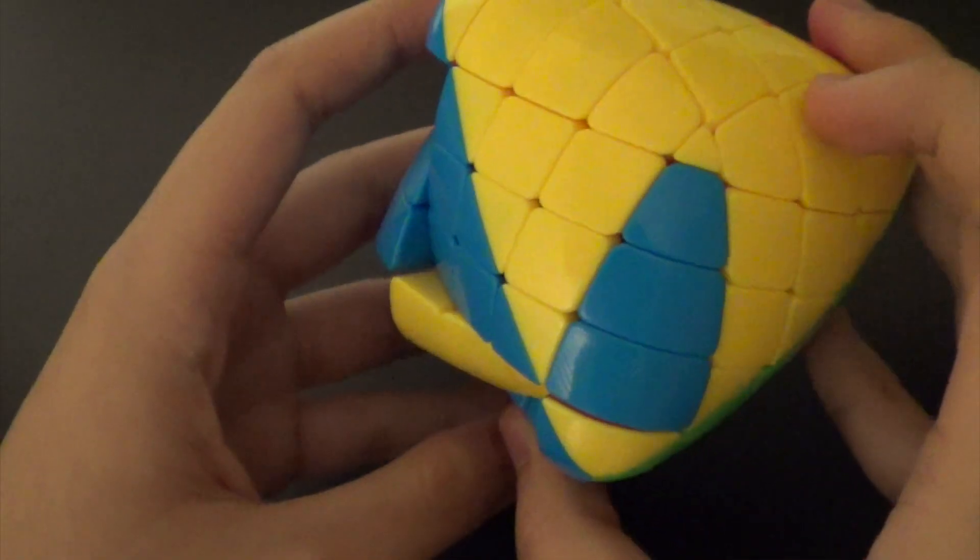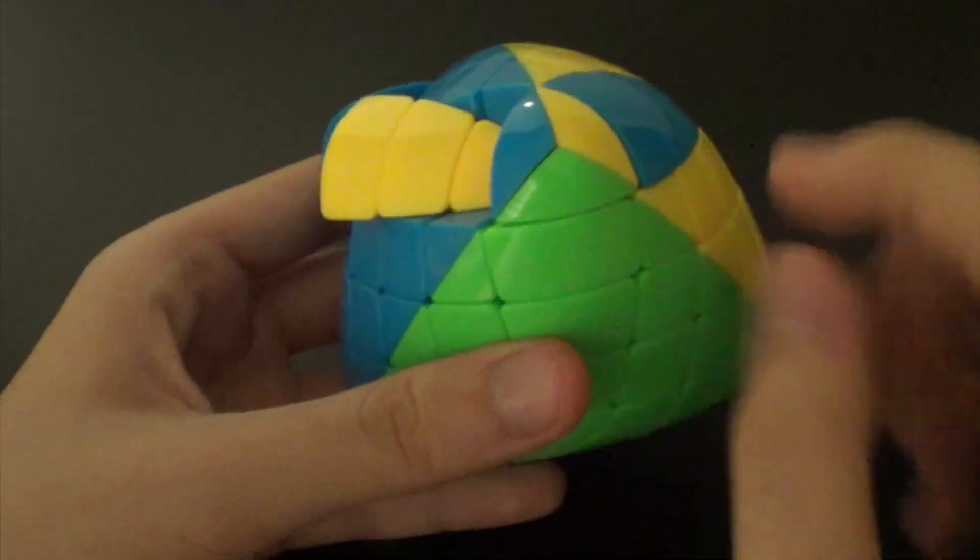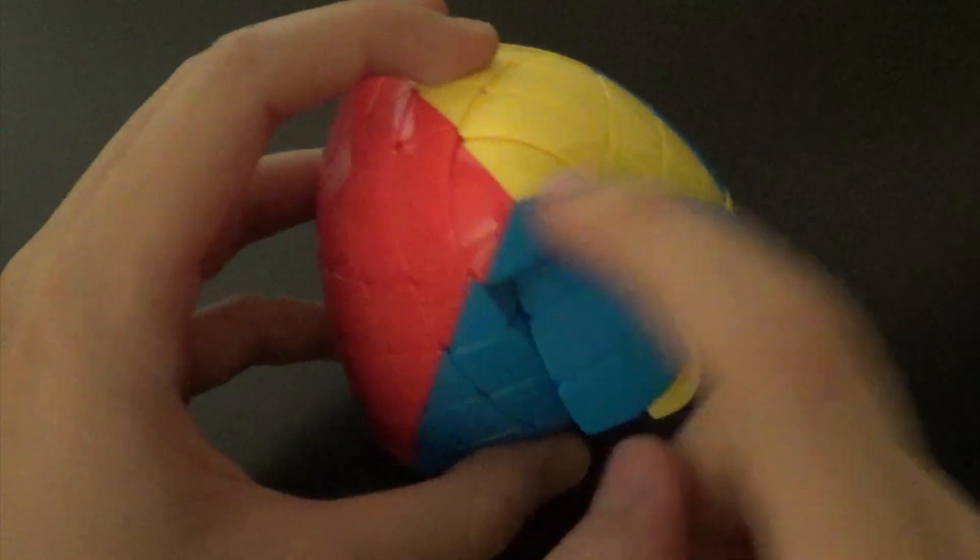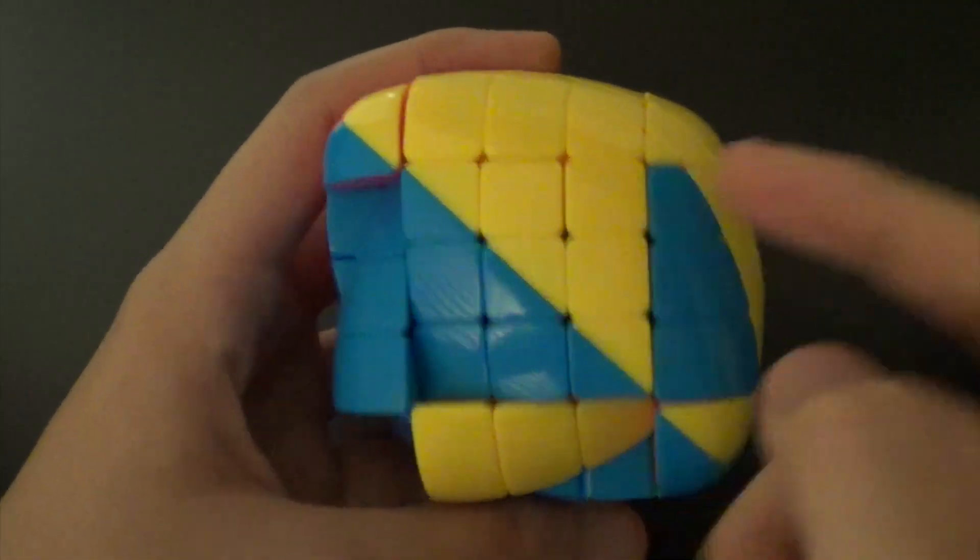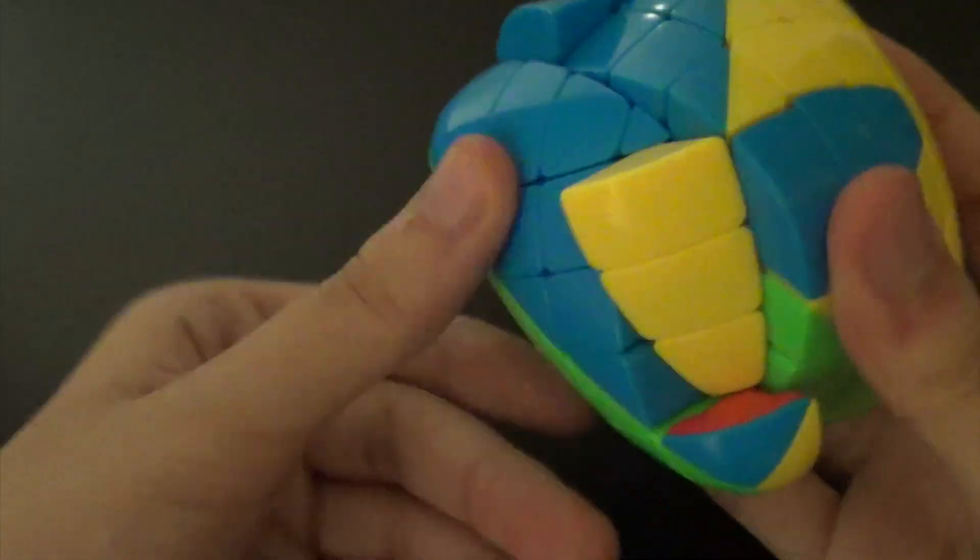All right, and so now what we have here is these corners are completed, and then this center would switch automatically 180 whenever we try to do any of the fish algorithms on its own.